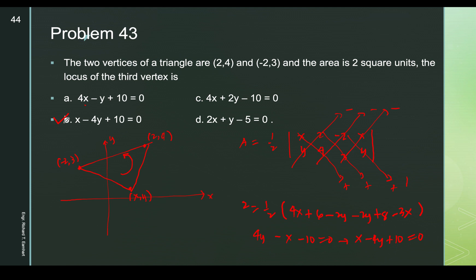If you take the third point on the other side, you get 4y − x − 16 = 0, but this is not among the choices. So we take the other solution, x − 4y + 10 = 0, as the correct answer.